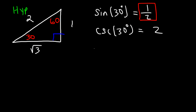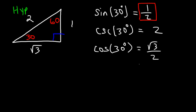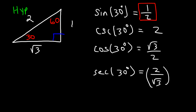What about cosine of 30? Cosine of 30 is equal to the adjacent side with respect to 30, that's the square root of 3, divided by the hypotenuse of 2. Now, if we wish to find secant of 30, we need to find 1 over cosine, which is 1 over root 3 over 2, and that becomes 2 over root 3. But we do have to rationalize it, so secant of 30 is equal to 2 square root 3 over 3.